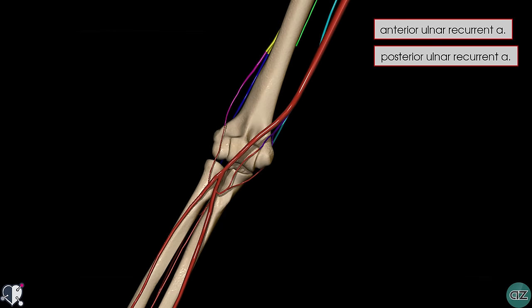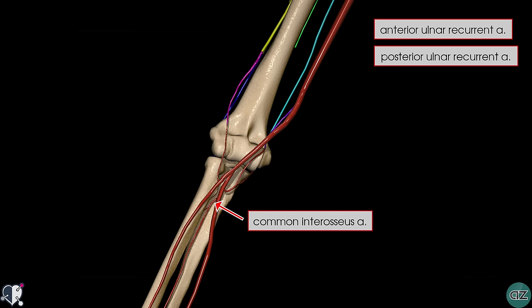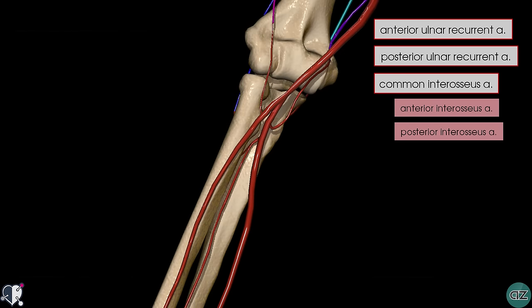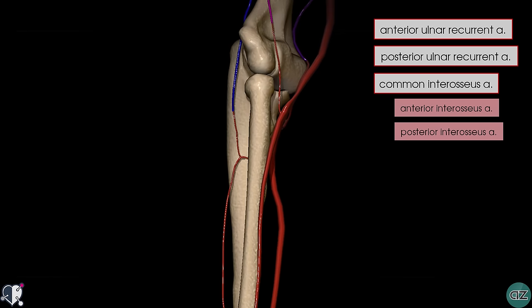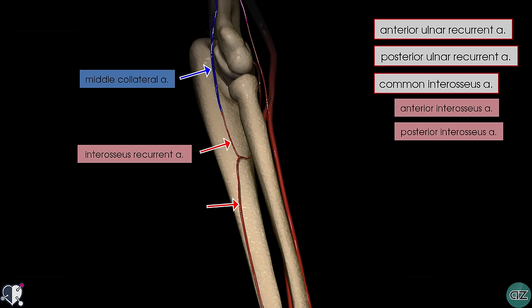A little more distally, there's another branch given off the proximal ulnar artery: the common interosseous artery, which divides into an anterior branch and a posterior branch. Zooming in closer, you can see the anterior interosseous artery descending down the forearm on the anterior aspect of the interosseous membrane. Rotating the model posteriorly, we can see the posterior interosseous artery, and it gives off the interosseous recurrent artery, which anastomoses with the middle collateral artery — a branch of the profunda brachii artery.